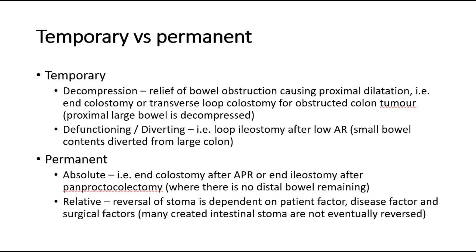For permanent stoma, absolute permanent examples include end colostomy after abdominal perineal resection, or end ileostomy after panproctocolectomy, where there is no distal bowel remaining. Relative permanent stomas exist where reversal depends on patient, disease, and surgical factors, and many created intestinal stomas are not eventually reversed.